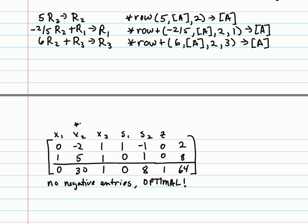Now notice that x sub 2, x sub 3, and s sub 2 are not unit columns. That makes them non-basic, which means they're going to have the value of 0.